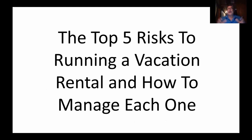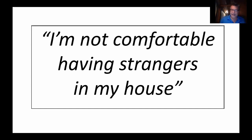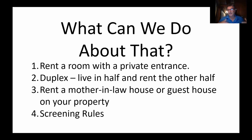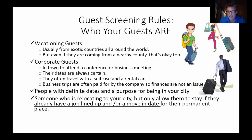Many people worry about things that can go wrong — that's why there's a course. If you don't have rules and don't manage your risks, things can go wrong. People aren't comfortable having strangers in their house — understandable. Solutions: have a room with a private entrance, live in a duplex and rent the other half, or get a house with a mother-in-law suite or guest house. The course has 10 screening rules and three questions — if guests don't answer the three questions or if you can't check off the 10 screening rules, they don't get into the property. You read the reviews of who they are and check them out.